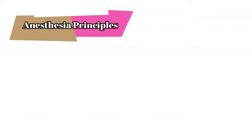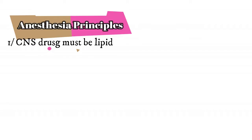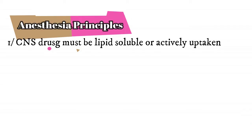If you want to talk about anesthesia, there are four main principles that you must understand. Rule number one: CNS drugs must be lipid soluble or be actively uptaken in order for them to pass the blood-brain barrier.